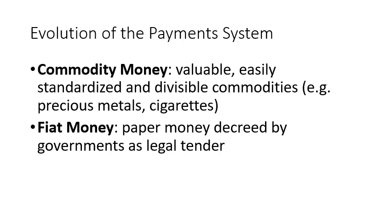Now, on the evolution of the payment system — how money has redeveloped over time. Usually, we start with commodity money, meaning we use any commodity or goods as money. There are conditions: it should be valuable — so we would not expect sand to be commodity money. It should also be standardized and divisible, meaning we can set a standard and divide it into small parts. Examples include precious metals like gold and silver, and in some specific historical periods, other goods like cigarettes.